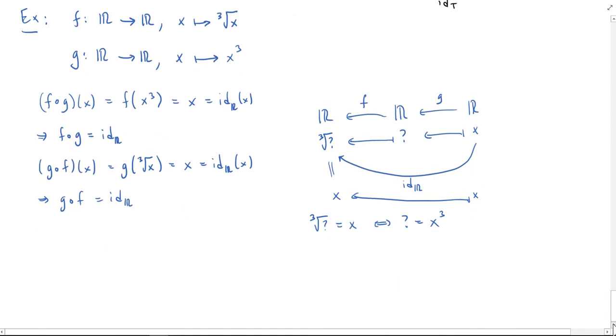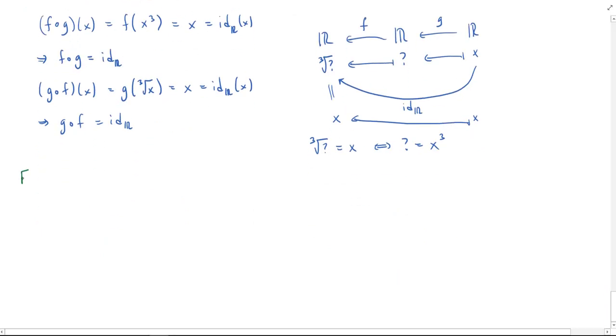We'll do one more quick example to show what can go wrong here. So let's say I start now. Again, we'll go from the real numbers to the real numbers. But instead of the cube root, I'll take the square root. Well, immediately you see there's going to be a problem because you can't take the square root of negative numbers. So let's adjust. And we'll just look at the non-negative real numbers.